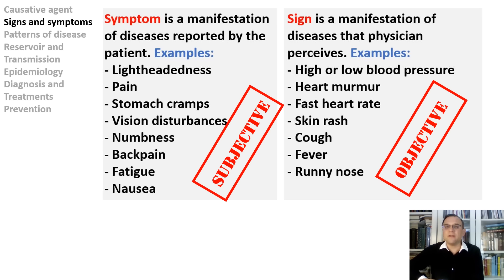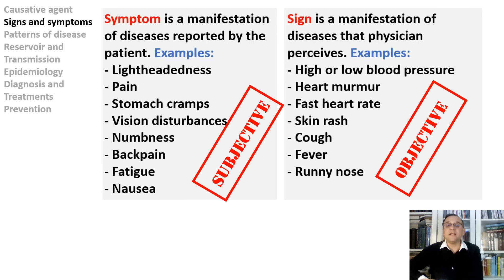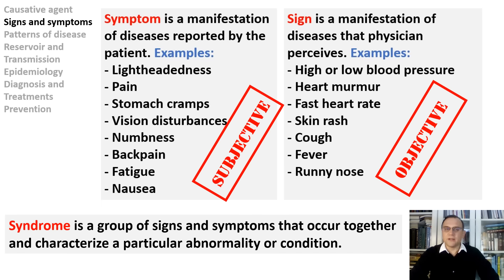A symptom is subjective, meaning that other people only know about it if informed by the individual with the condition. A symptom is something an individual experiences, while a sign is something a doctor or other person notices. Signs and symptoms are the body's ways of letting a person know that not everything is running smoothly. A syndrome is a group of signs and symptoms that occur together and characterize a particular abnormality or condition.